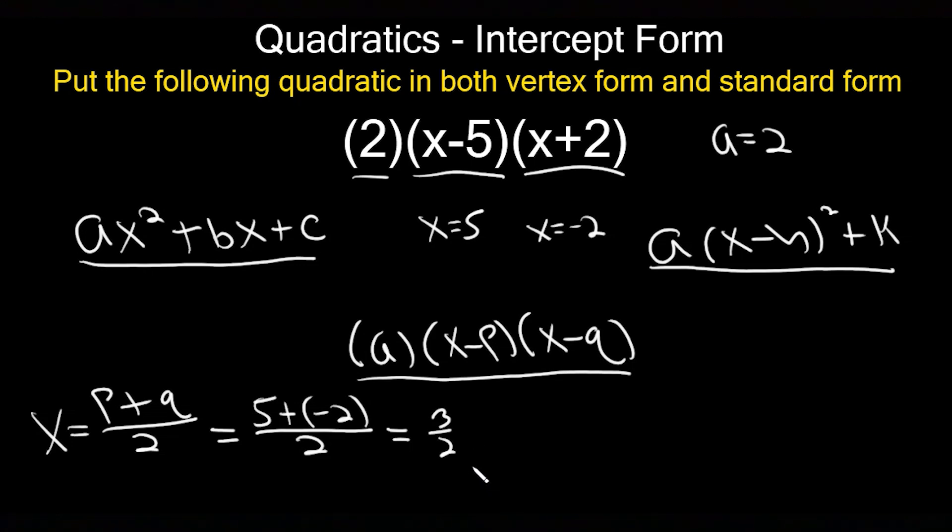This is really 1.5. You could plug it into your calculator and multiply this whole thing out. Let's do that. We're going to replace the x values here. I'm going to have 2 times 3/2, and I'm going to put it as a decimal, 1.5.